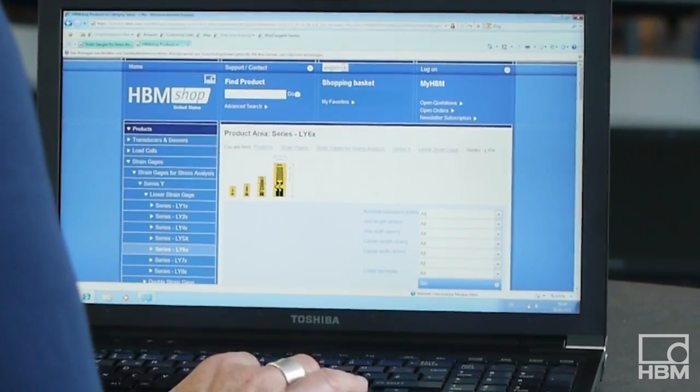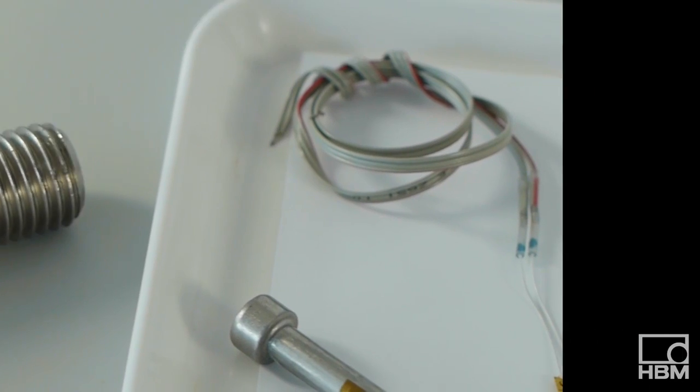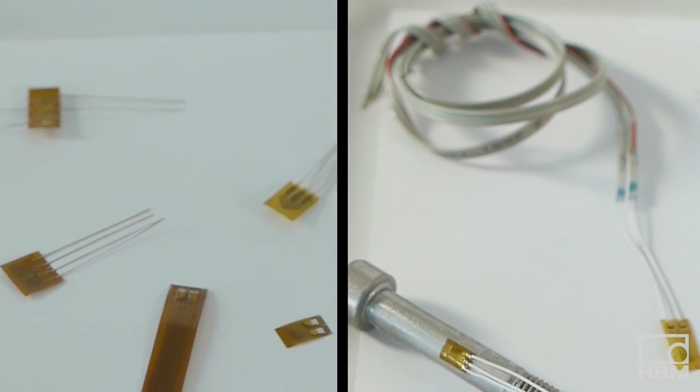We choose a strain gauge with 6mm wires which is very handy in the processing. For the easiest handling, strain gauges with finished fitted cables are the best alternative.